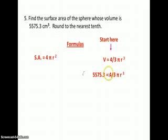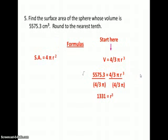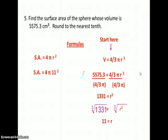We need to get rid of the four-thirds π, so we divide both sides by that, giving us 1,331 equals r cubed. Taking the cube root of both sides, r equals 11. Now we plug into our surface area formula, and our answer is 1,520.5 square centimeters.